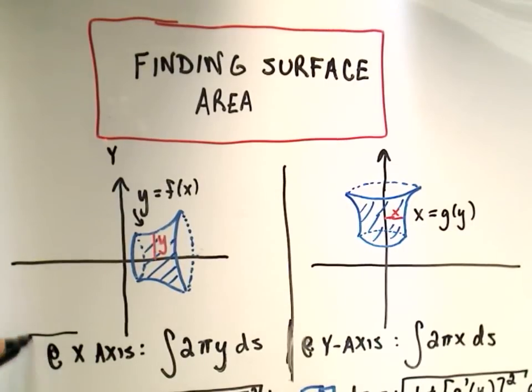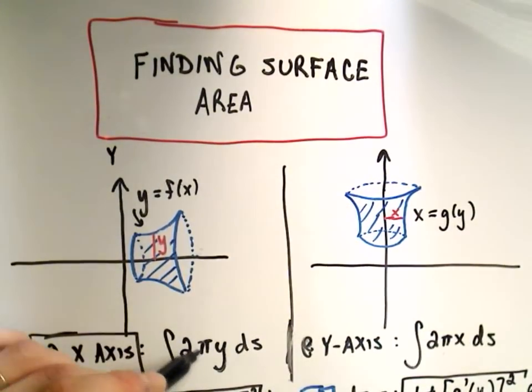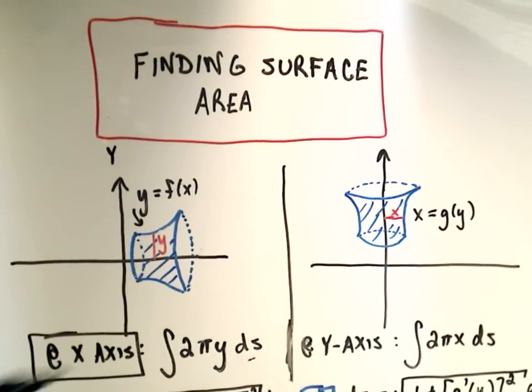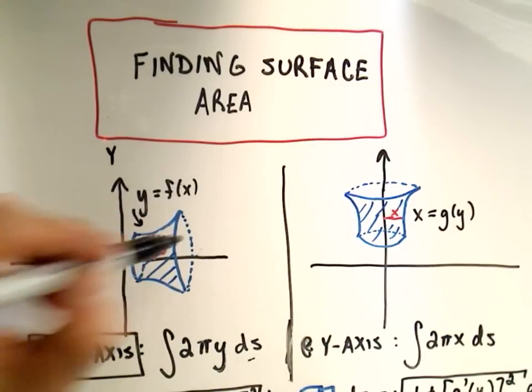So if you want to go about the x-axis, we have to use the formula 2πy ds, and we'll talk about this ds in just a second. Okay, so we've got some function, we're rotating it about the x-axis.